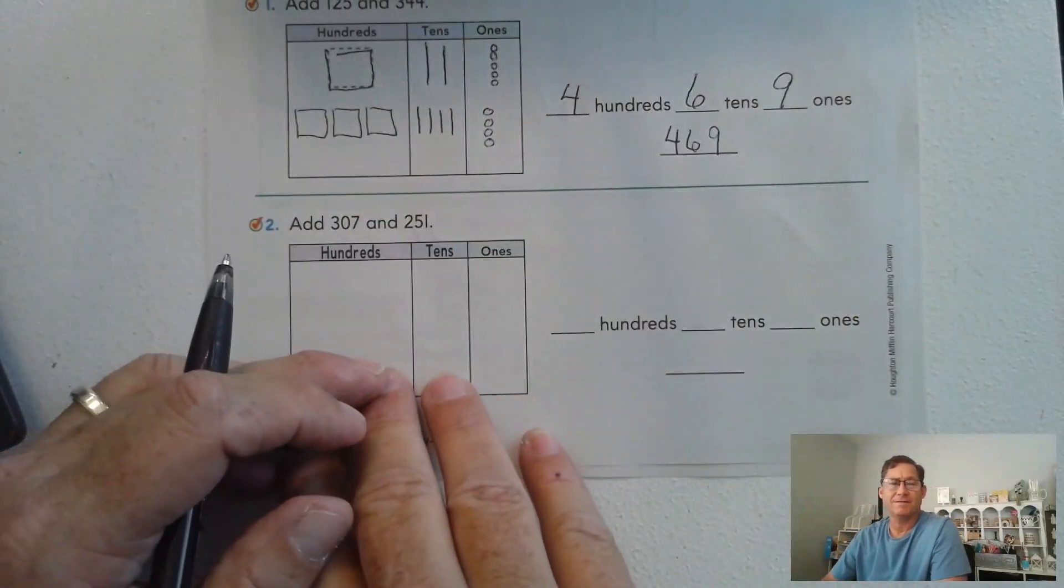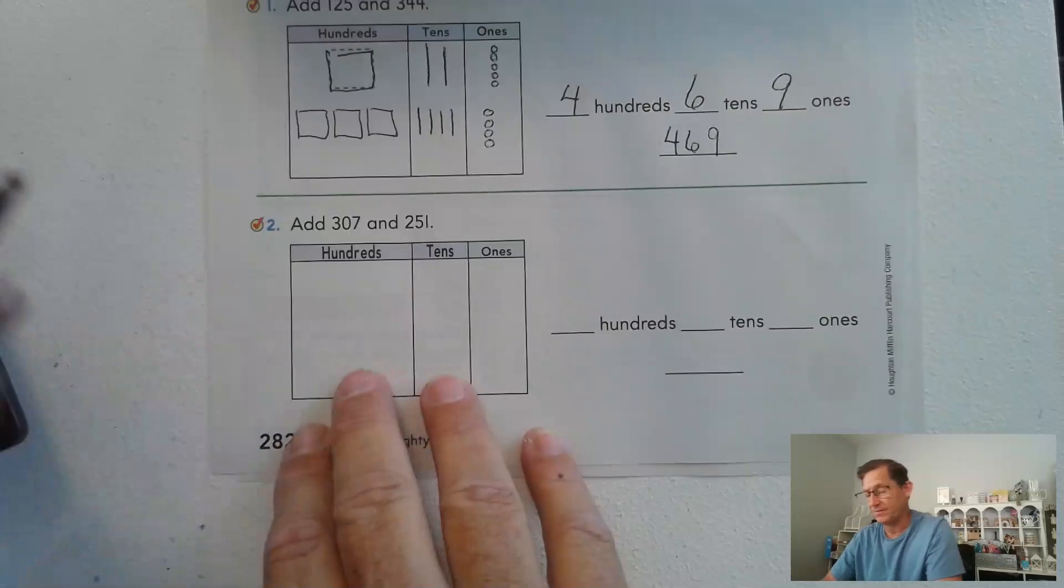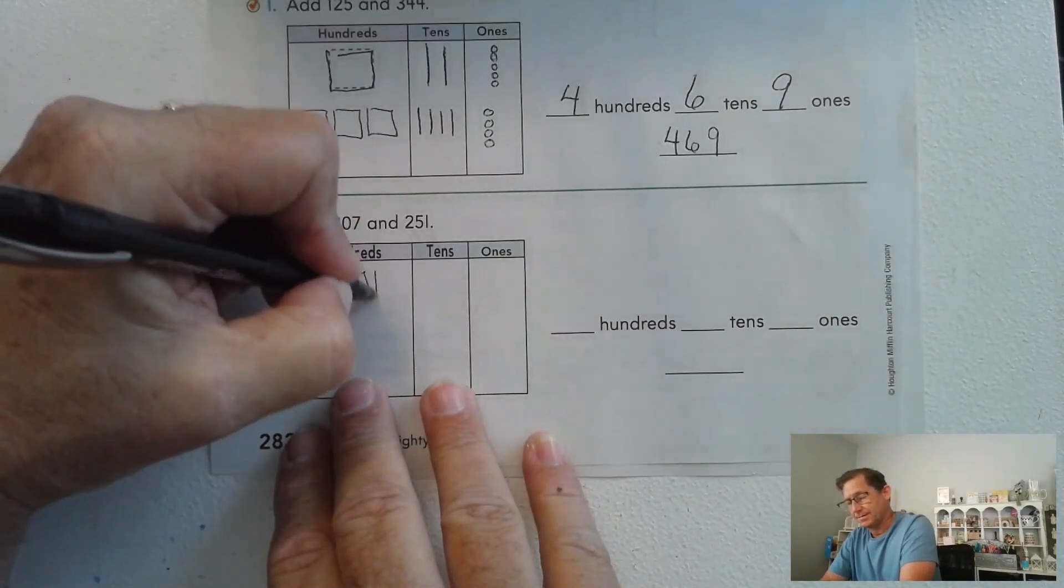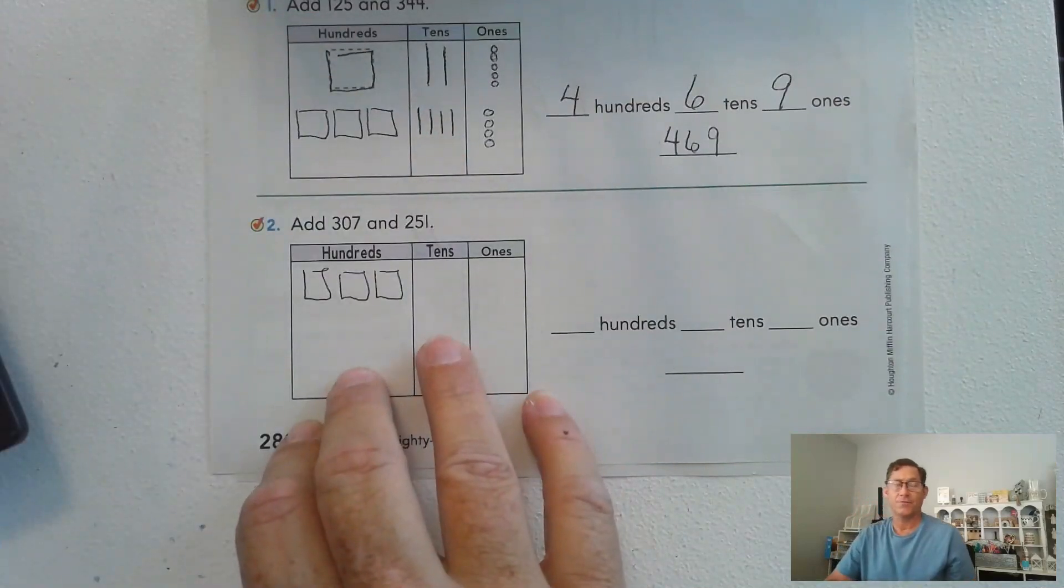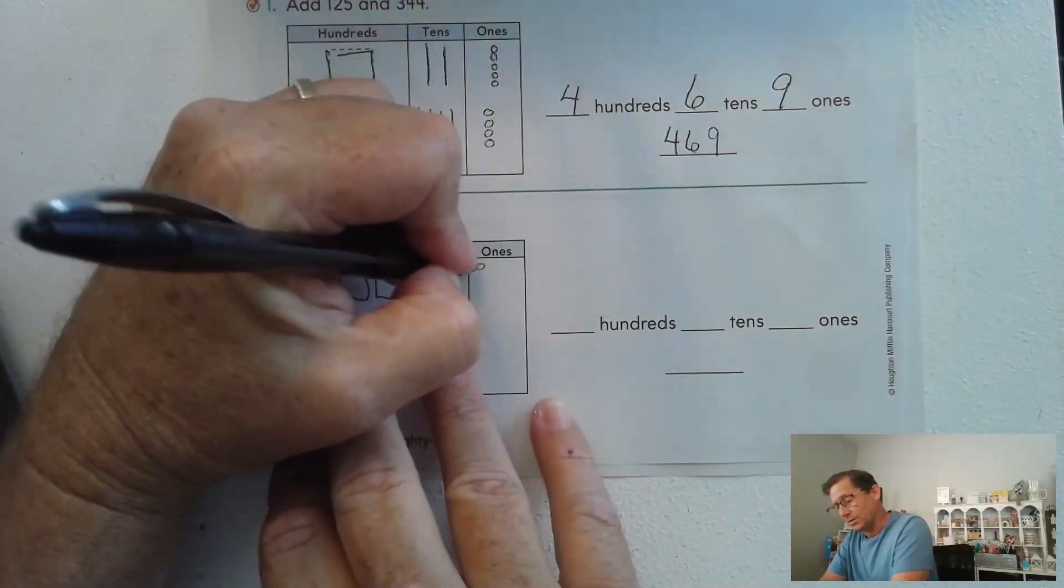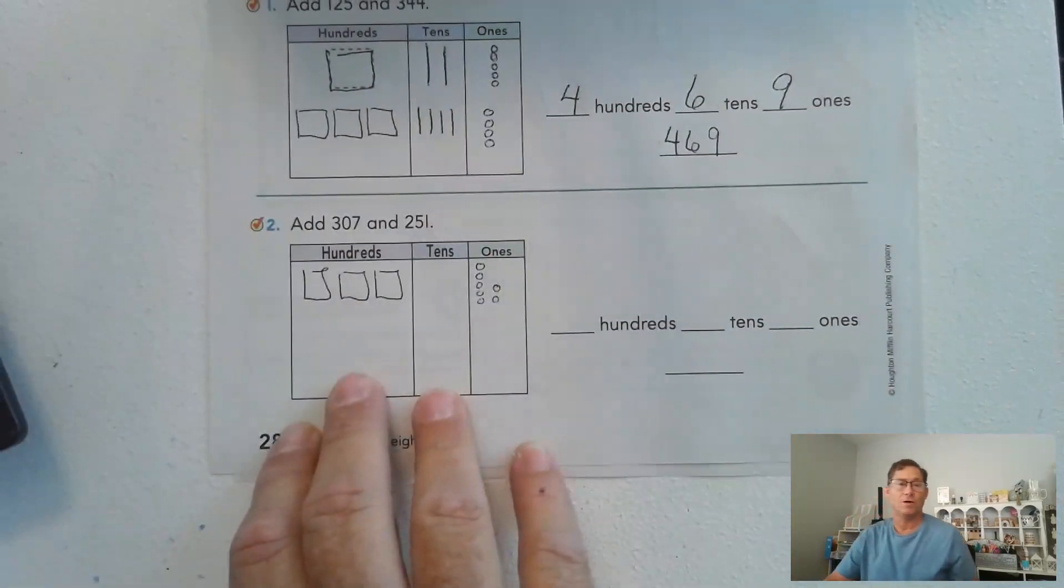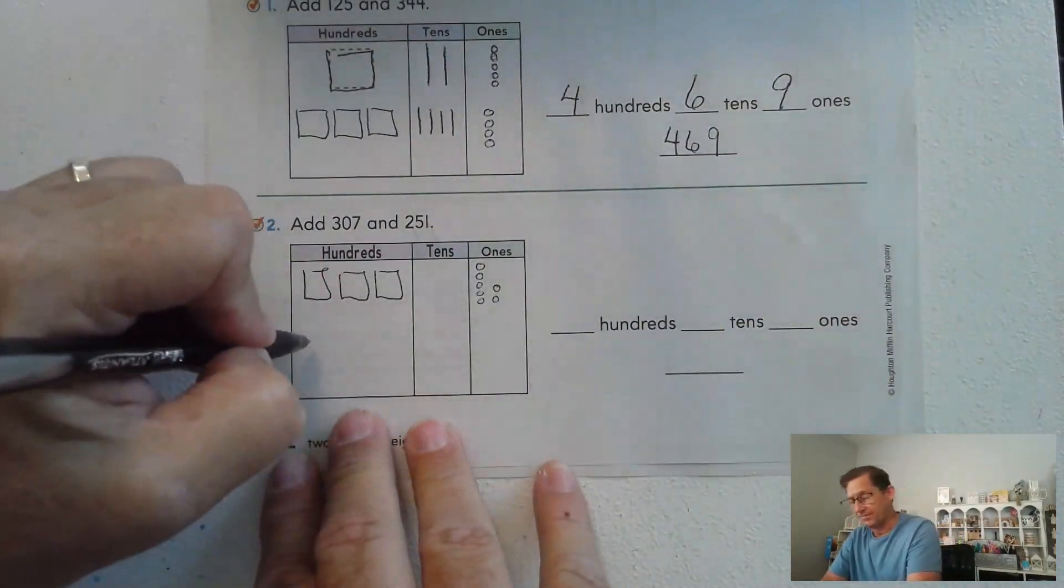307 and 251, and we're going to add those. So 307, zero tens, 307, one, two, three, four, five, six, seven ones. So we're going to add 251.